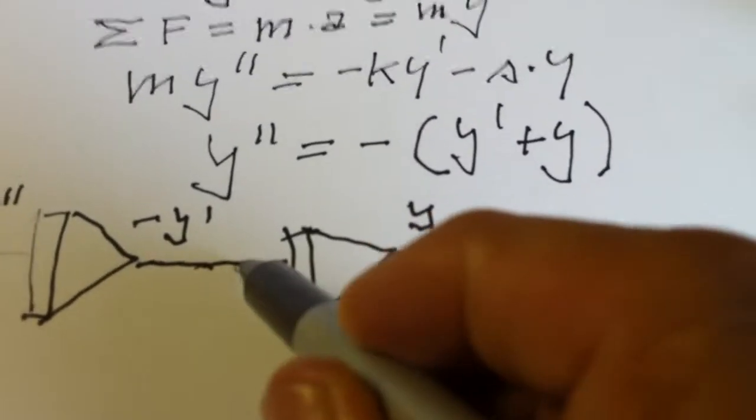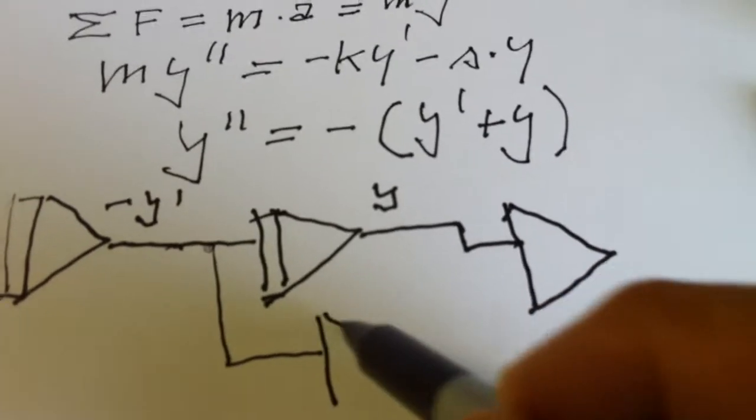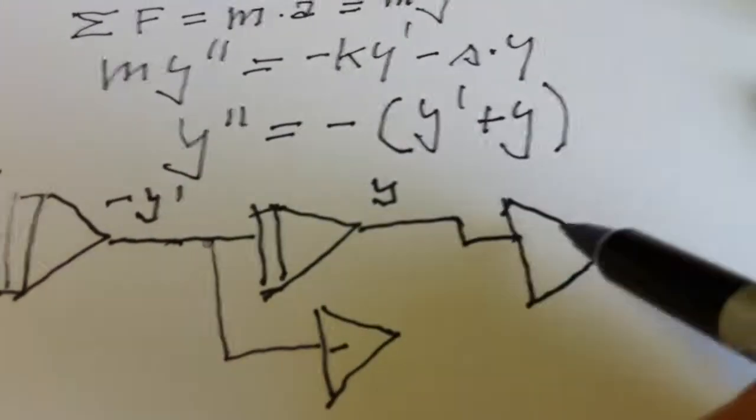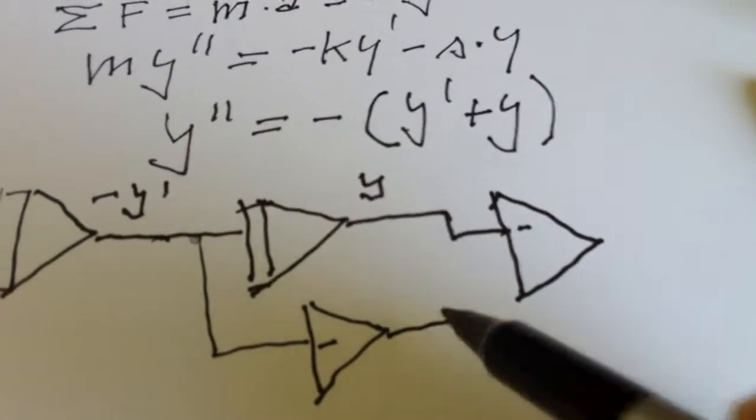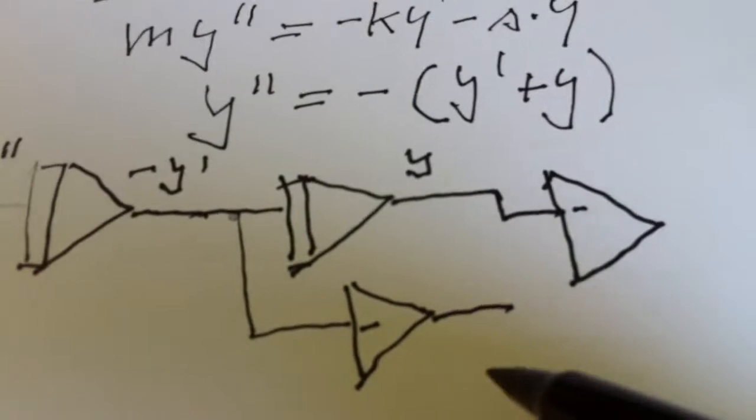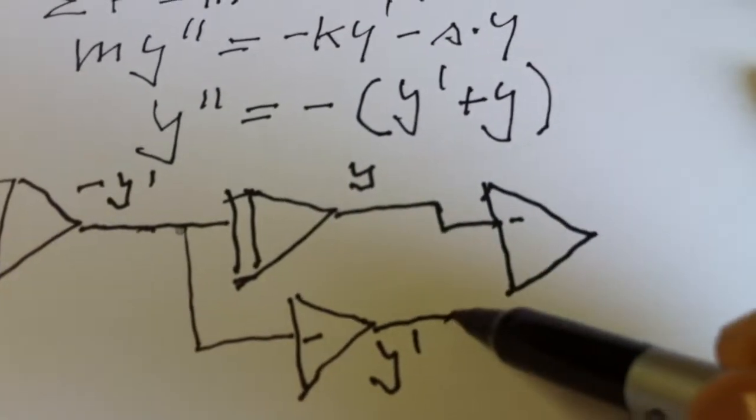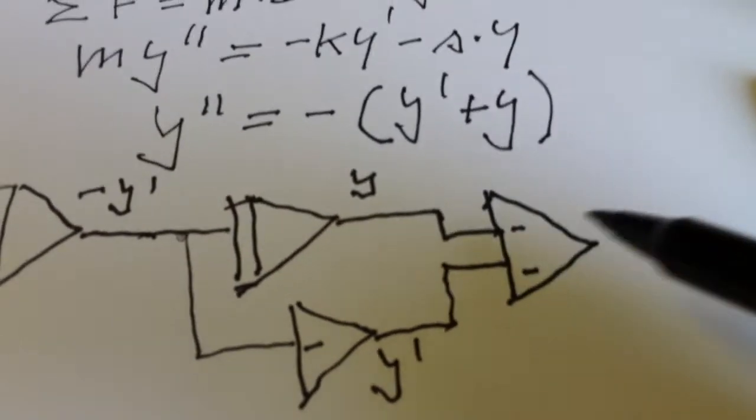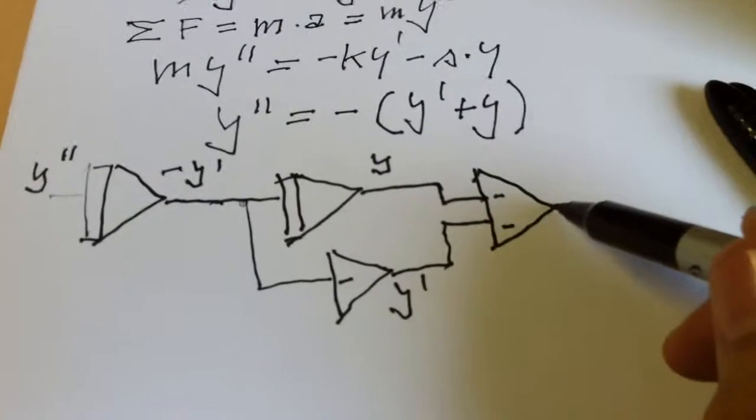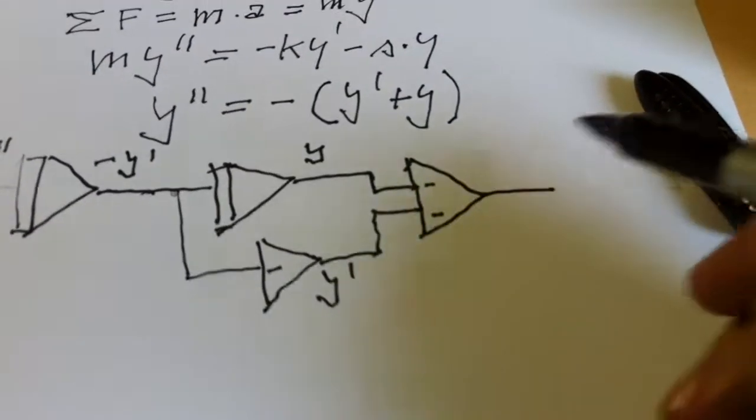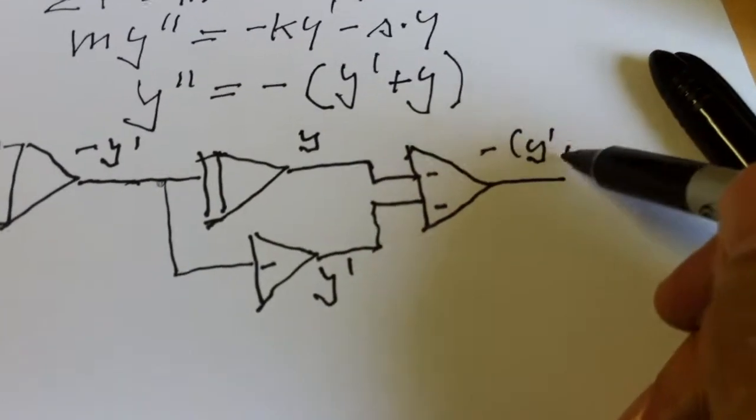Let's take here a second adder and we just use this as an inverter. So, the output of this one is minus minus Y prime, it's Y prime. I add this to our first adder and now what we have here is minus Y prime plus Y.